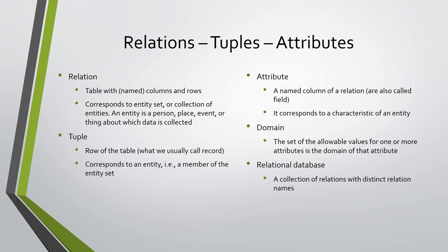In the relational model, data are represented by relations. A relation is a table with named columns and rows. A relation corresponds to an entity set, or collection of entities. An entity is a person, place, event, or thing about which data is collected.